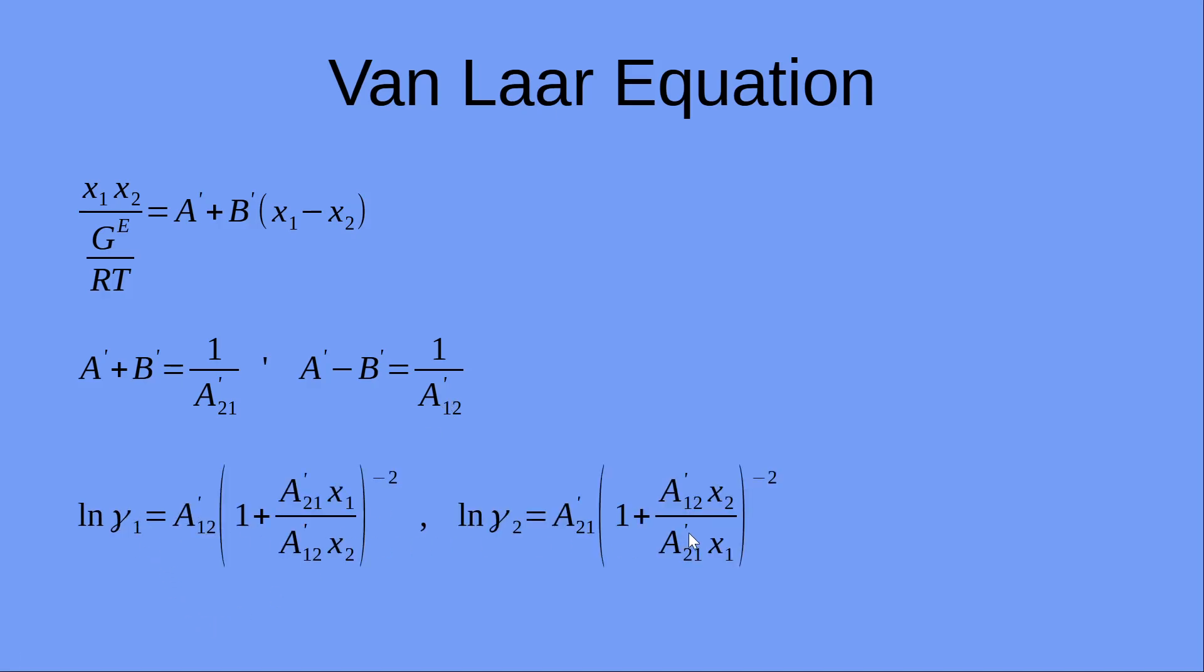We get the Van Laar equation by solving it, putting these constants in this equation and solving by the differentiation rule that I discussed earlier in the slide to get gamma 1 and gamma 2. These are the Van Laar equations.